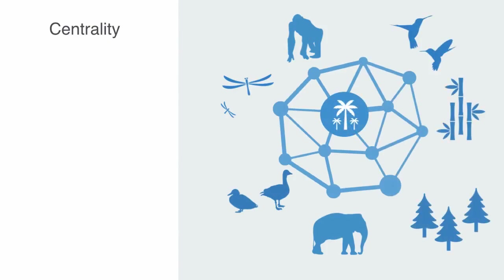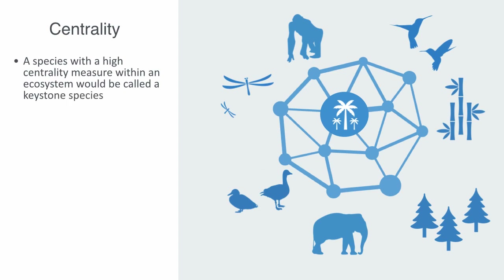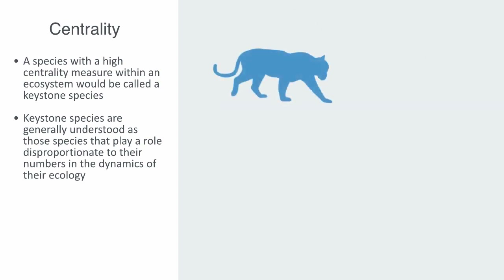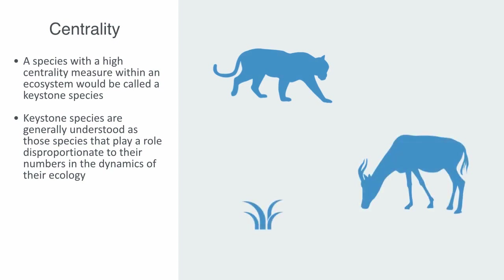Centrality is a measurement of how central a node is within a network and thus how significant it is within the system. A species with a high centrality measure within an ecosystem would be called a keystone species. Keystone species are generally understood as those species that play a role disproportionate to their number in the dynamics of their ecosystem. A classical keystone species is a predator that prevents a particular herbivorous species from eliminating dominant plant species — since the prey numbers are low, the keystone predator's numbers can be even lower and still be effective, yet without the predator the herbivorous prey would explode in numbers.